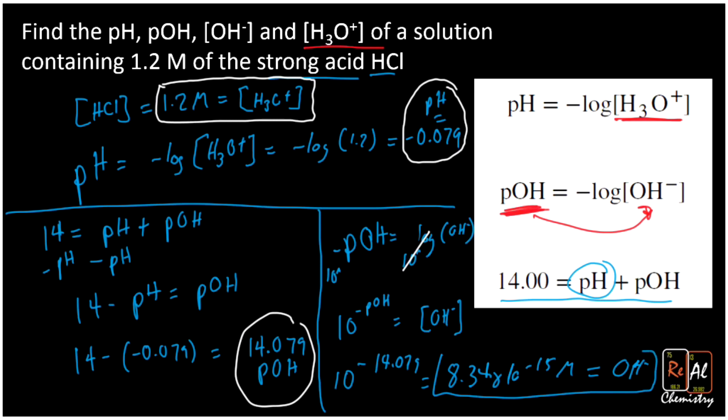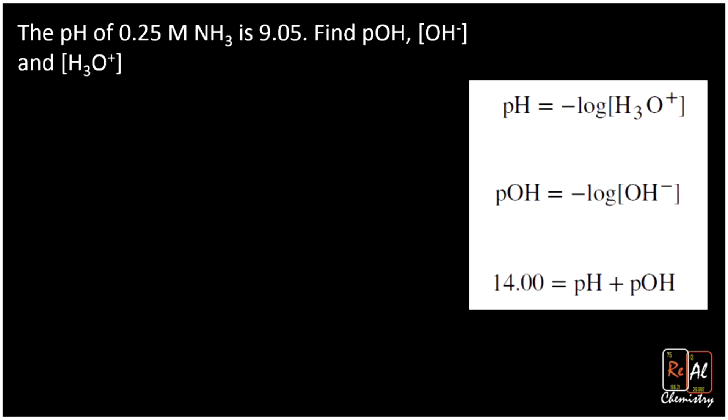So that's my final answer there. Alright, let's do one more. In this problem, we're asked to find the pH. I'm sorry, we're told that the pH of 0.25 molar NH3 is 9.05, and then we're asked to find the pOH, the OH-, and the H3O+.